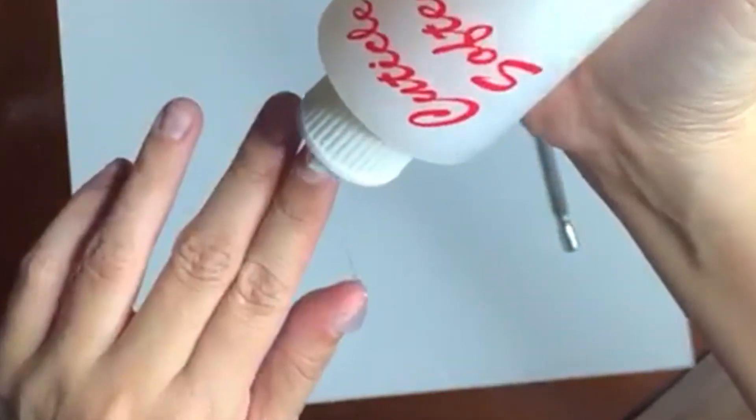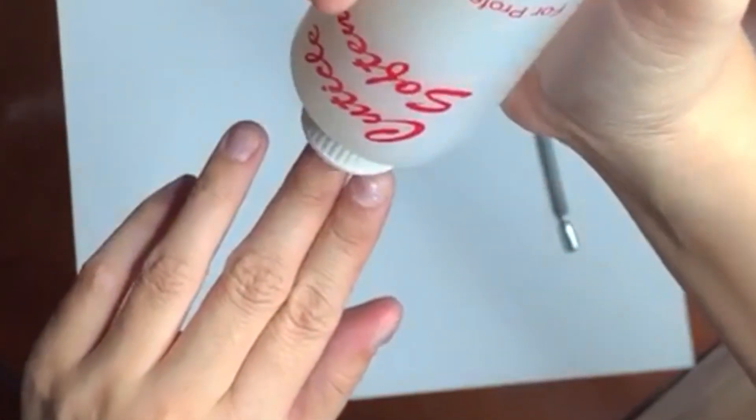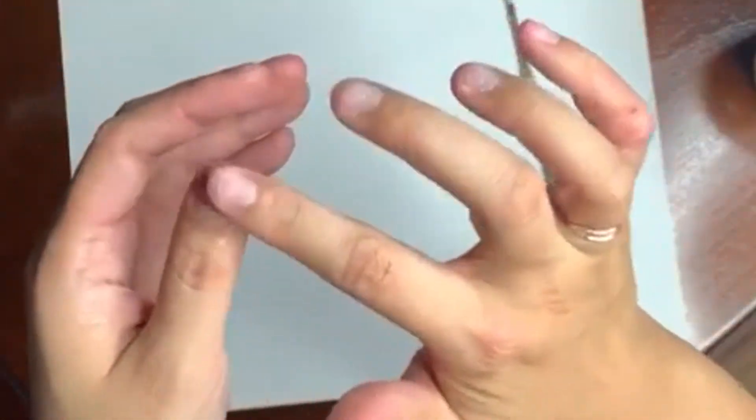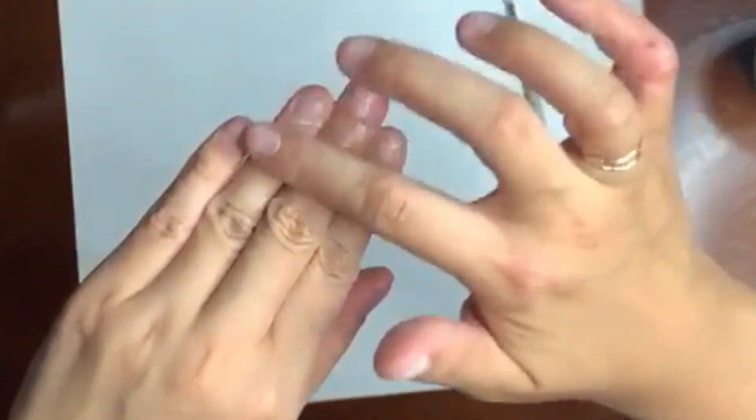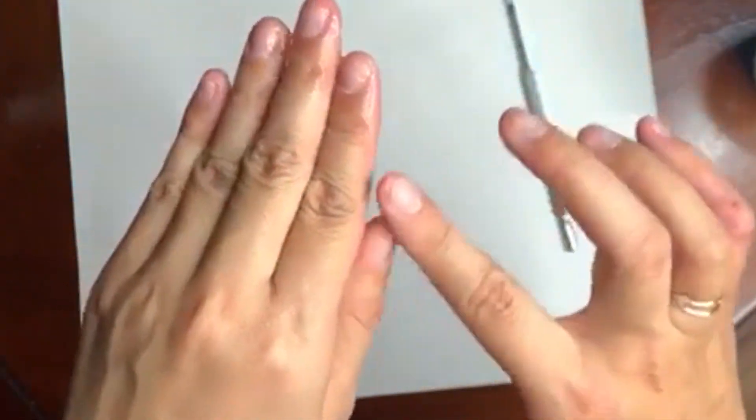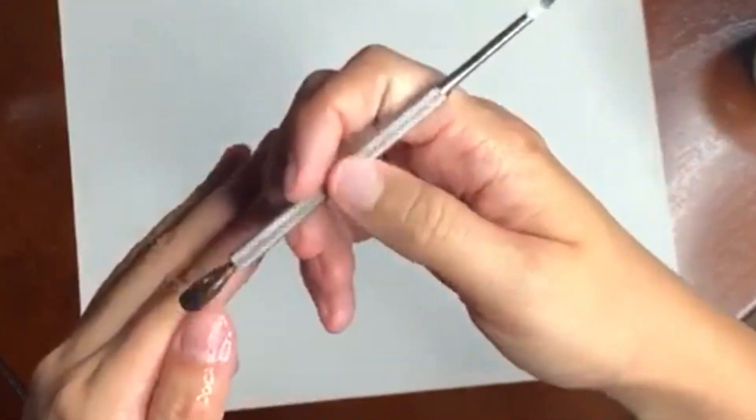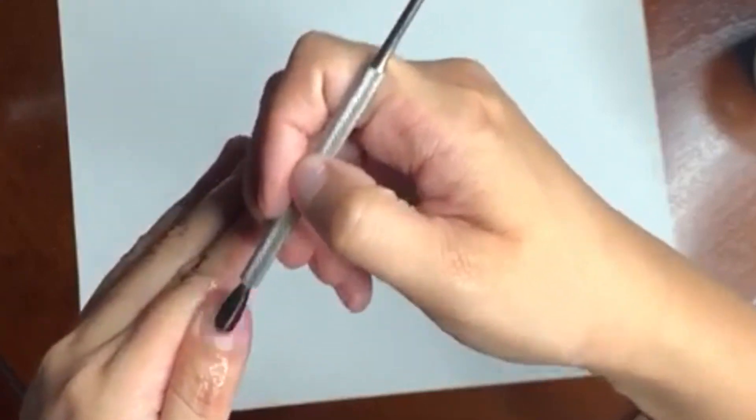I am not a nail technician. Take a cuticle softener and place it all over your nail beds. I take a cuticle pusher, push back the cuticles, and clean that invisible cuticle line. After you're done, wash your hands with soap and water.